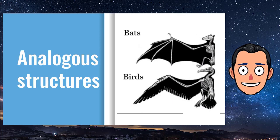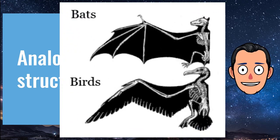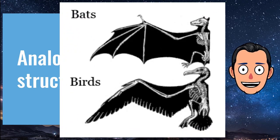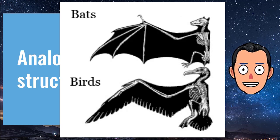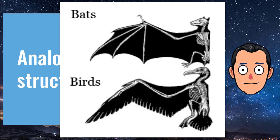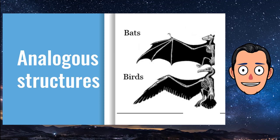Analogous structures are structures that are similar in unrelated organisms. The structures are similar because they evolved to do the same job, not because they were inherited from a common ancestor. For example, the wings of bats and birds look similar on the outside but different on the inside, and they have the same function. However, wings evolved independently in the two groups of animals.